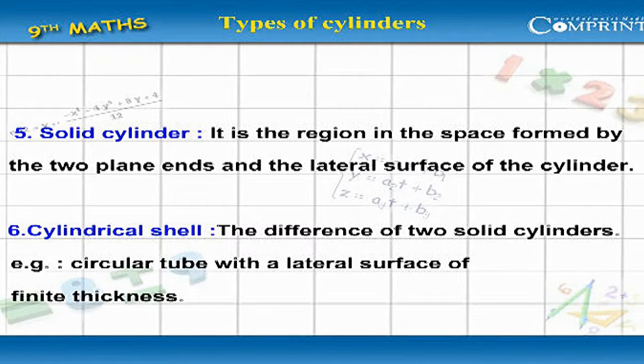A cylindrical shell is the difference of two solid cylinders, for example, a circular tube with a lateral surface of finite thickness.